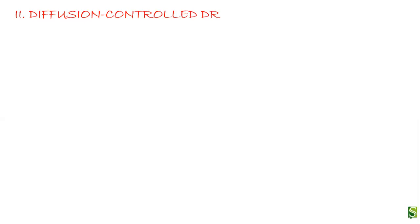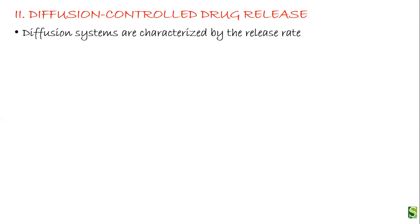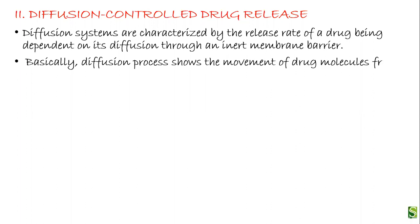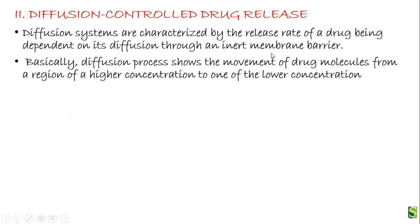The diffusion controlled drug delivery system basically works on the principle that in this type of system, the drug release is controlled by the diffusion of the drug through the polymeric membrane. The diffusion systems are characterized by the release rate of a drug being dependent on its diffusion through an inert membrane barrier, which is nothing but a polymeric membrane. The diffusion process shows the movement of drug molecules from a region of higher concentration to one of lower concentration.